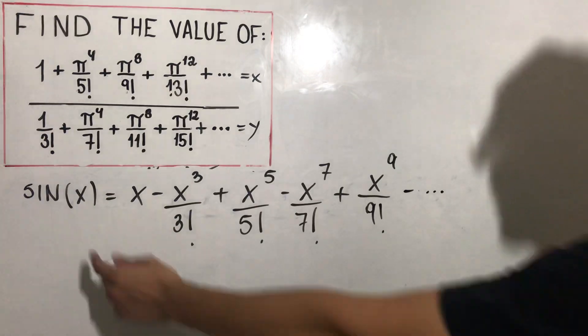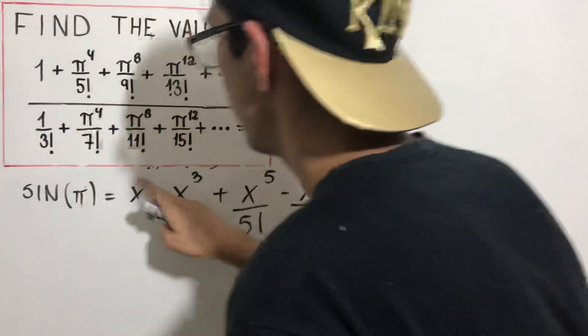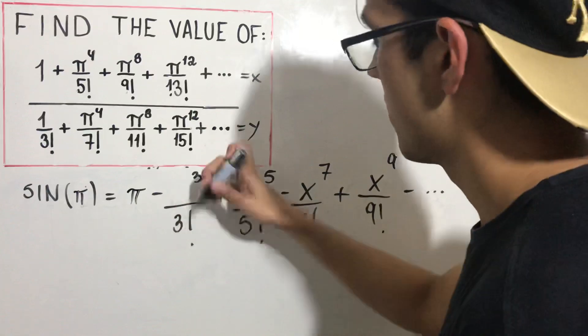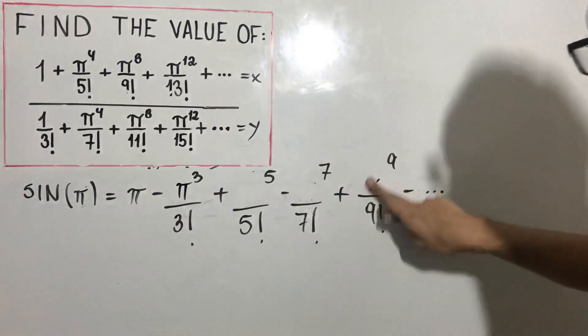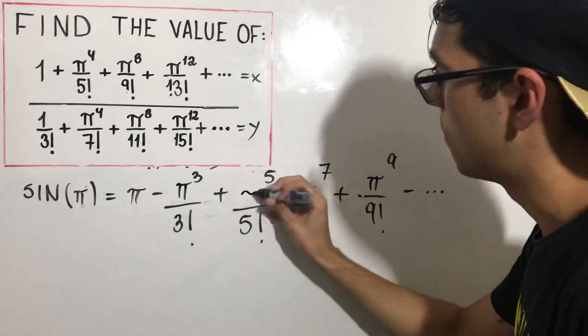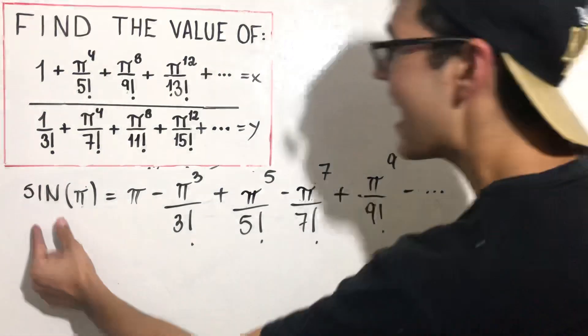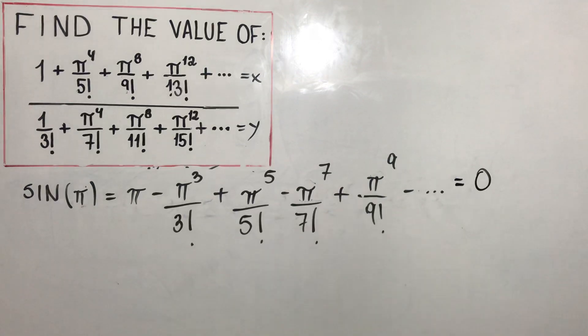If x equals π, what happens? π here, π, π, π, π, π, π, π, and π. But we know the sine of π is 0, so the whole thing is equal to 0.